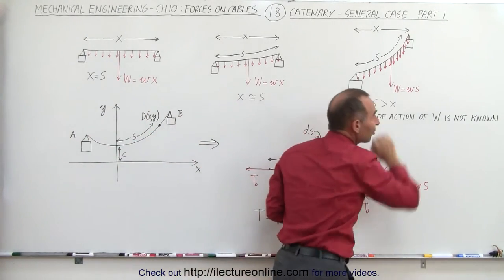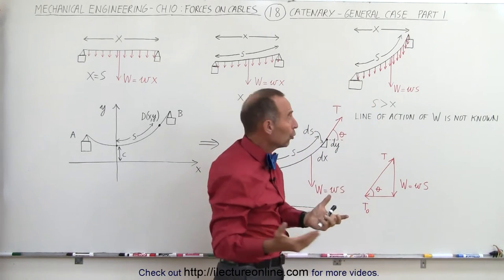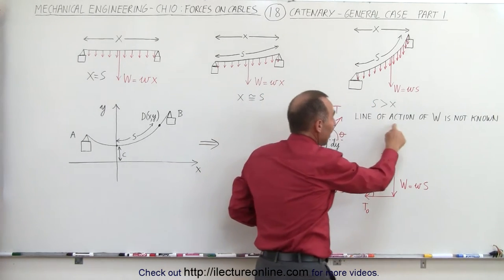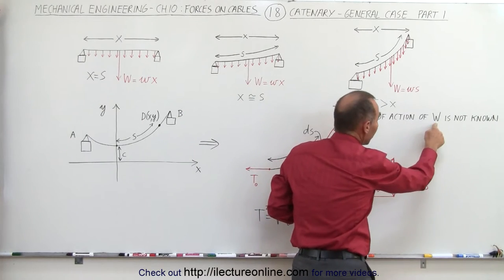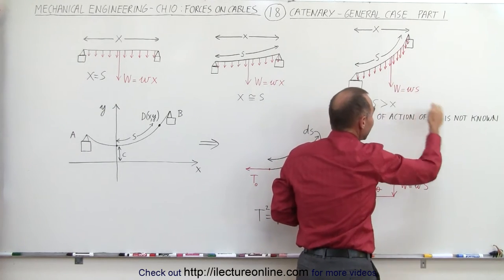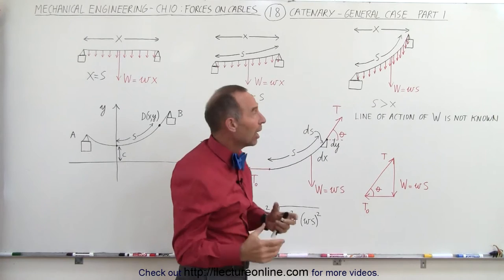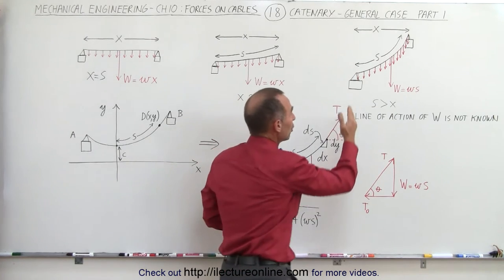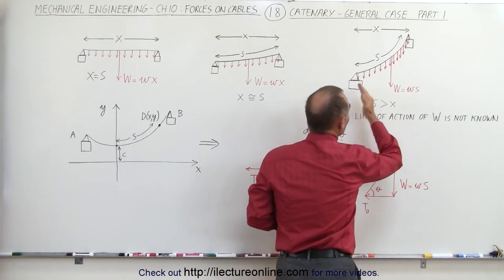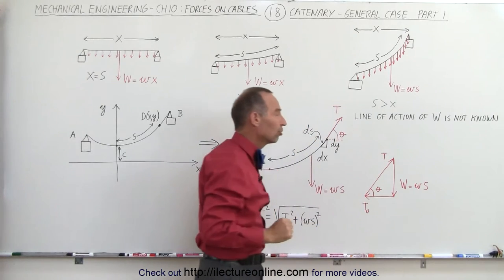The total weight W will be somewhat to the right of center, and we don't know how far. The line of action of W, the total weight of the cable, becomes an unknown in this case. You know it's closer to the right support than to the left support, but you don't know by how much.